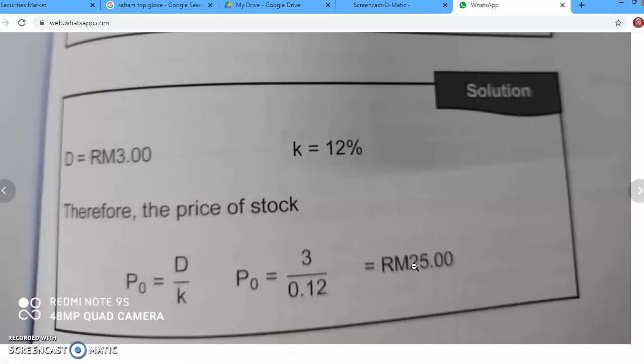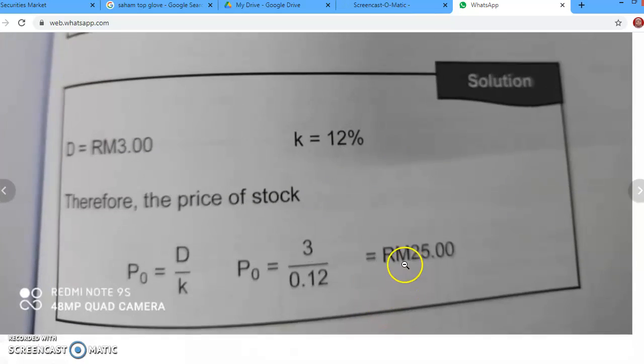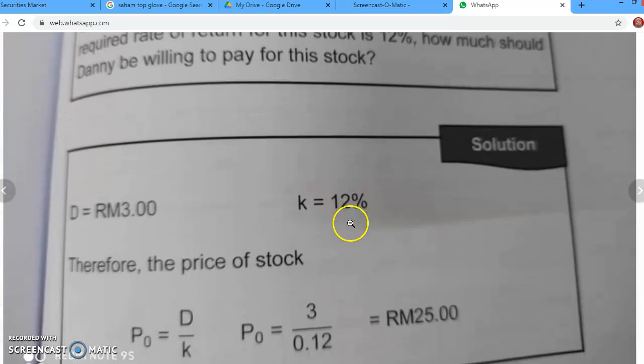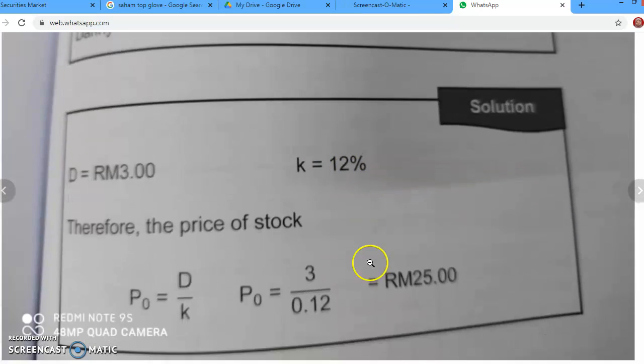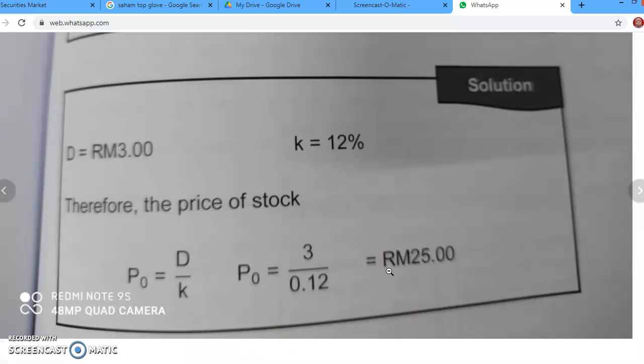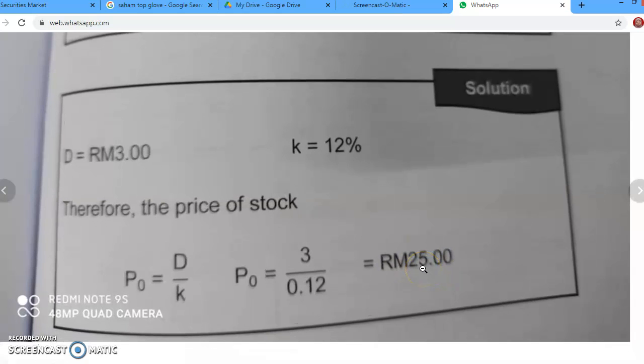Tetapi sebaliknya, sekiranya di pasaran, stock ini dijual pada harga RM 20. So nilai sebenar bila kita kira RM 25, dengan target kita 12% tadi, required rate of return, so agak valuable lah untuk you beli stock tu sebab harga jual murah. Sedangkan nilai sebenar dia sebanyak ini RM 25 kan.